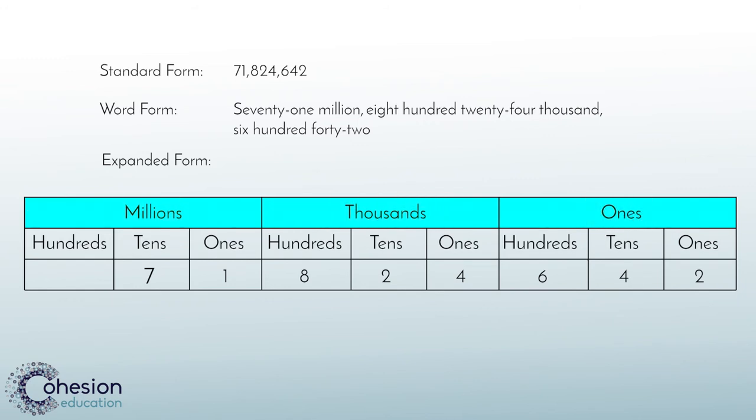This number will be read as 7 times 10 million because 7 is in the 10 million's place. Now, you will add the next place value which is represented as 1 times 1 million because the 1 is in the millions place value.